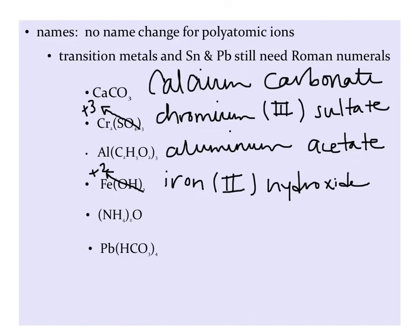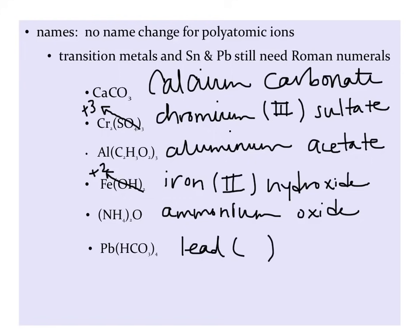In the next example, in parentheses, we have a polyatomic ion — ammonium. And then just oxygen, which we call oxide. And in the last example, lead. It's not a transition metal, but it does have more than one possible charge, so it will need a Roman numeral. And that's a four.